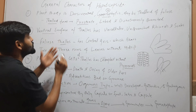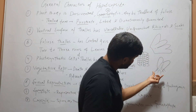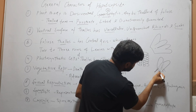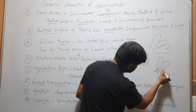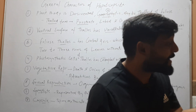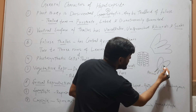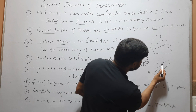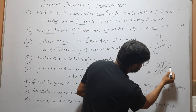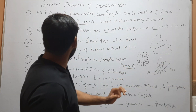The ventral surface of this dorsiventral body has unicellular unbranched rhizoids and scales. You can see on the ventral side these structures — these are unicellular unbranched rhizoids, which absorb water and minerals and provide anchorage to the thallus. On the ventral side there are also unicellular scales. The ventral side has both scales and rhizoids, which are unicellular and unbranched.